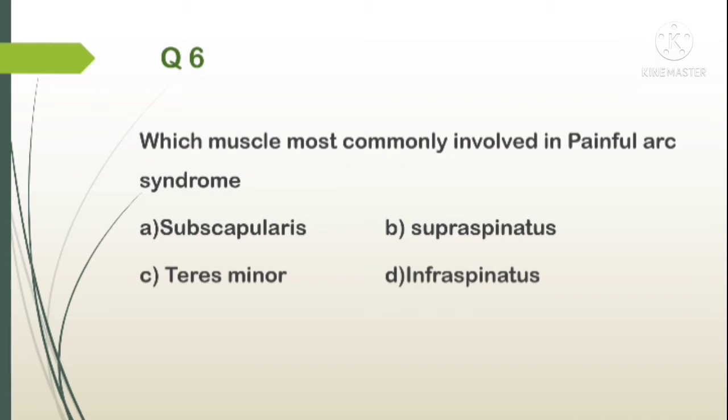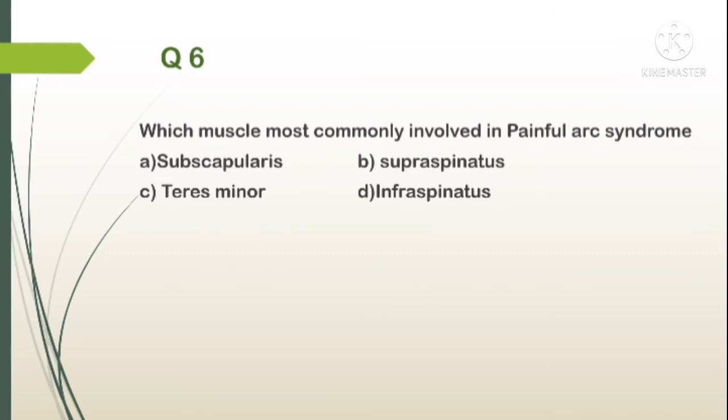Question number 6. Which muscle is most commonly involved in painful arc syndrome? A. Subscapularis, B. Supraspinatus, C. Teres minor, D. Infraspinatus. In painful arc syndrome, the most commonly involved tendon is B. Supraspinatus.